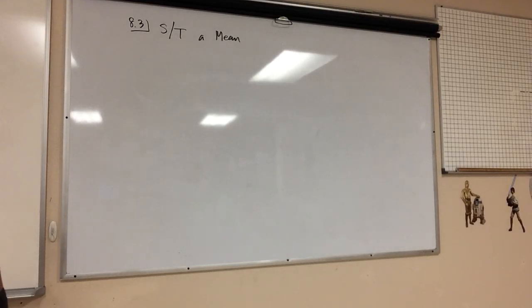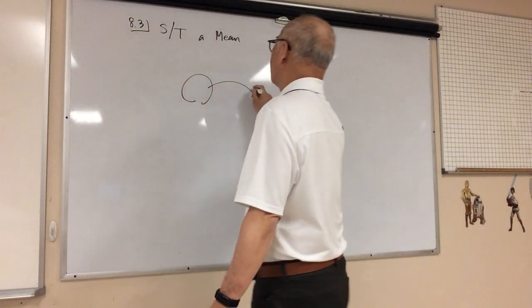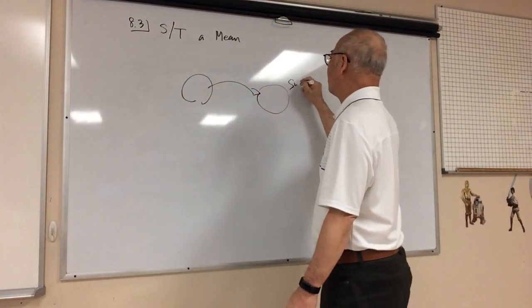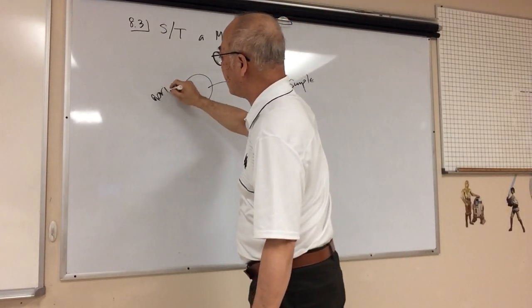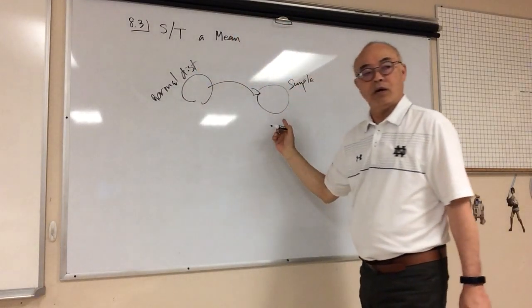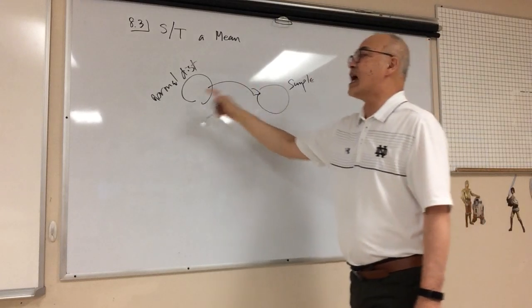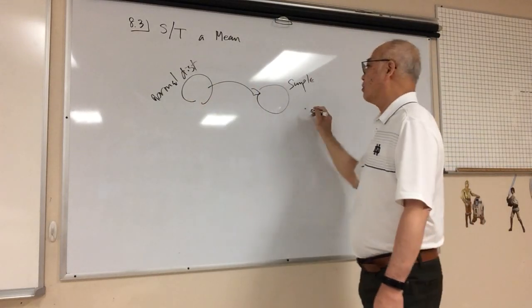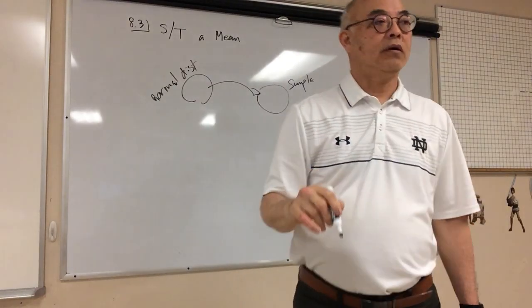Either the population is normally distributed. So the population that you're taking the sample from, if you can somehow tell me that this is a normal distribution, I'm good to go. If it's not, then I look for n to be greater than 30.